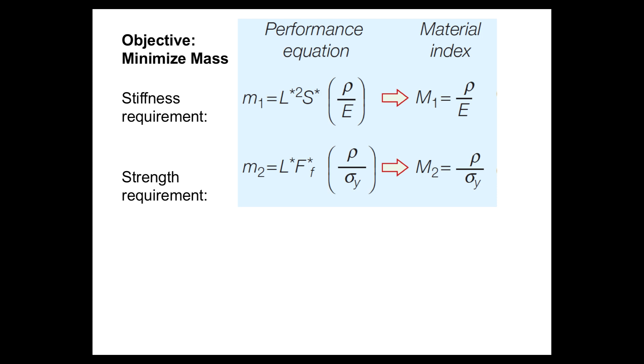We also have a stiffness requirement, S star, that needs to be met as well as a strength requirement, F star. So based on these two requirements, we derived two equations for our mass.